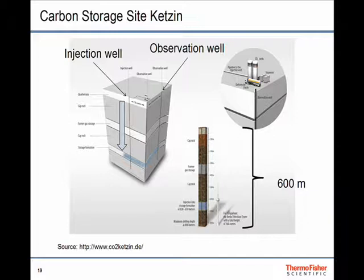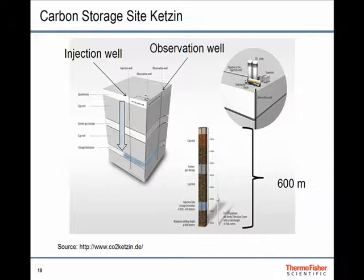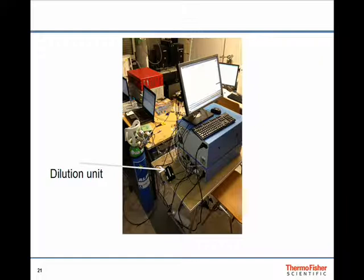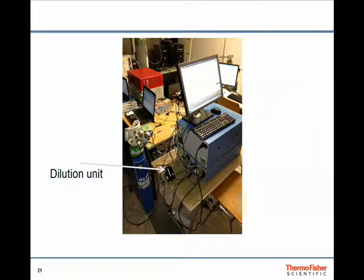You can also do carbon storage research. Here, they injected CO2 underground in a pilot site and watched the plume move underground. There's an injection well and an observation well about 600 meters underground under a caprock layer. Before they started to inject, before we started measuring, they injected isotopically different CO2 and watched that move underground. This is a picture of the setup—the injection well, the observation well, and back here the container where we had the analyzer. We actually diluted the signal because it was pretty pure CO2 and above 3,500 ppm, we have trouble with saturation.